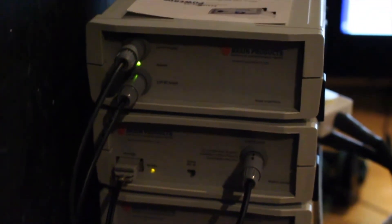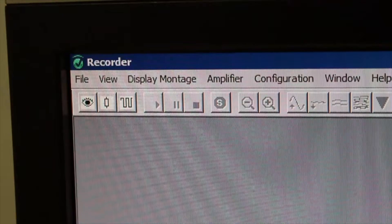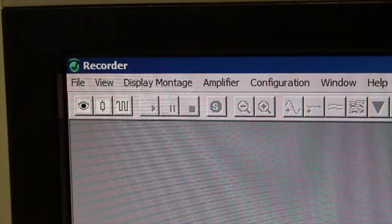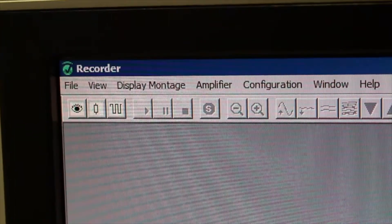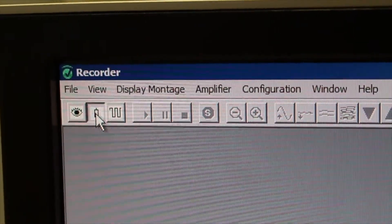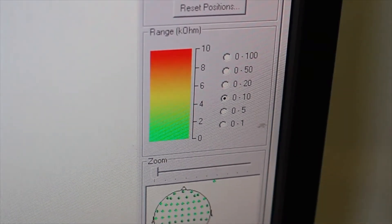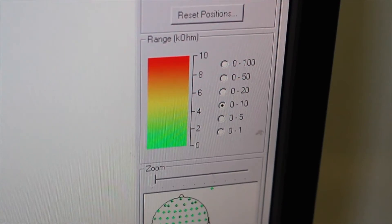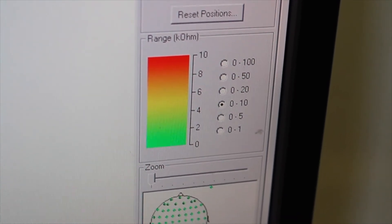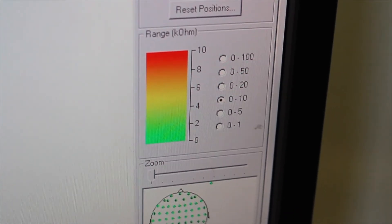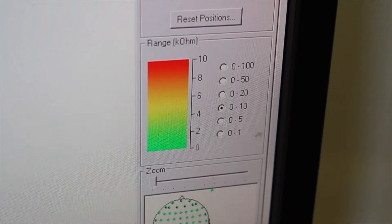Once connected, switch the amplifiers on and check that power is being supplied. Now you need to check the quality of the signal the EEG cap is receiving. Open BrainVision on the EEG PC and select the middle icon to view the impedance measures. Adjust the scale on the right to spot electrodes with high impedances. All electrodes should be under 50 kilo ohms in order to record EEG data correctly.